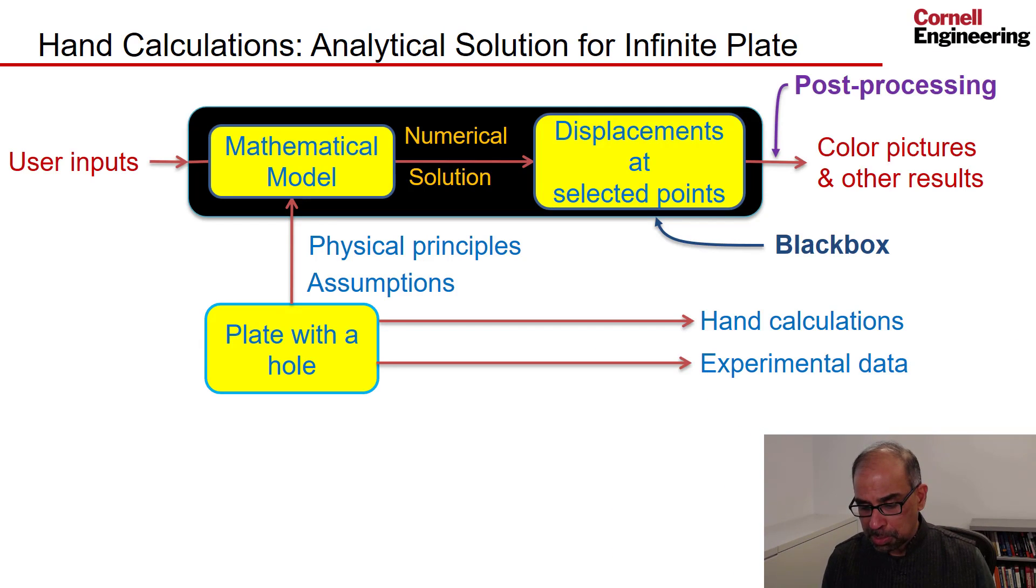If I go back to my framework of what's inside the black box and look at the mathematical model—it's a boundary value problem—I can solve it analytically, but I have to make an additional assumption that the plate is infinite. Essentially, I approximate the boundary conditions and apply them at infinity.